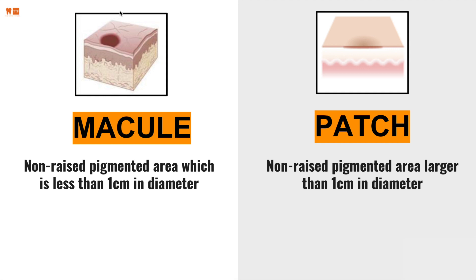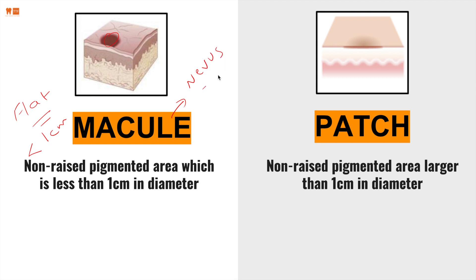Macule — what's a macule? It is a non-raised, so flat, pigmented area which is less than 1 cm in diameter. Fairly simple. What can this be? Well, a nevus — that's a macule.